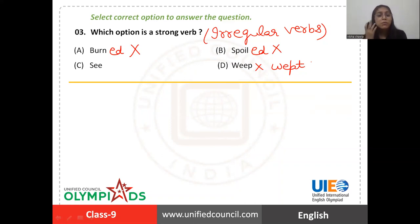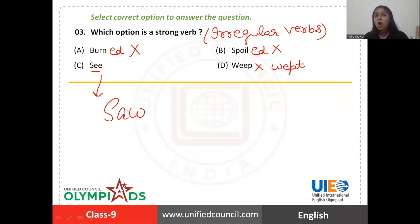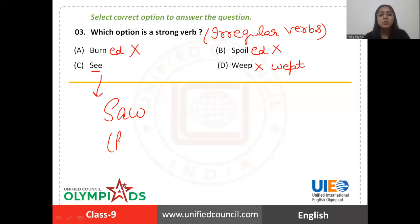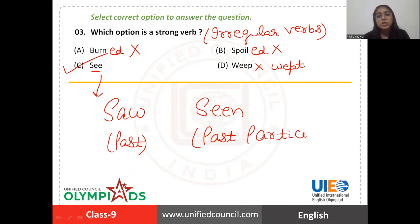Their past and past participle forms are formed by making changes to the vowel in the verb. As is the case with the verb 'see' — its past form is 'saw'. We have not added 'ed' at the end; instead, we made changes to the vowel to form the past. Such verbs are strong verbs. 'See' is definitely the right answer because its past form is 'saw' and past participle form is 'seen'. So the right answer is option C.